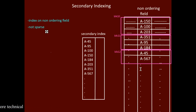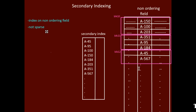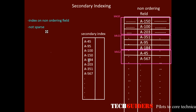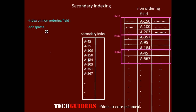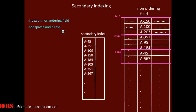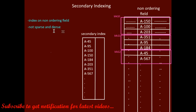When every record has a corresponding entry in the index, then for every search key value there will be an entry in the index. Hence this type of indexing is dense. The secondary index is always dense and not sparse.